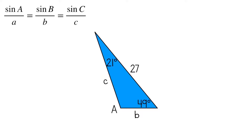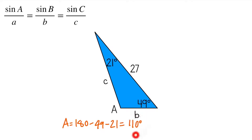The first step is to find angle A, because we need an angle opposite this side. Like at the beginning of the video, we'll do A equals 180 minus 49 minus 21. So A equals 110 degrees. I'm going to use this 110 degree angle and the side of 27 to solve for the other side lengths.